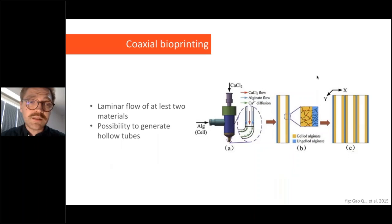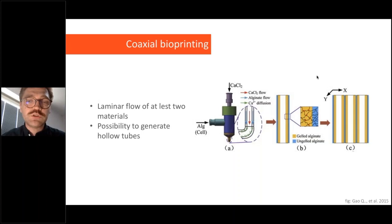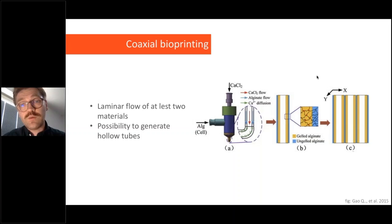The last technique is coaxial bioprinting, which uses a special nozzle that can extrude two or more materials simultaneously, creating a laminar flow of fluids. With this arrangement, you can print hollow fibers — running a sacrificial material through the center and the hydrogel in the outer shell — to create hollow tubes.